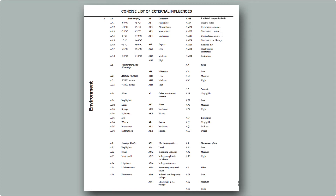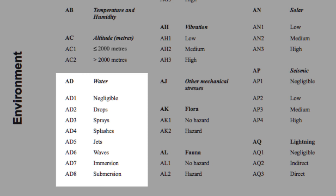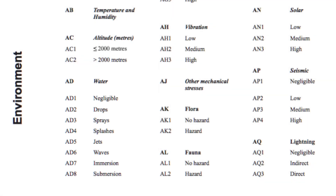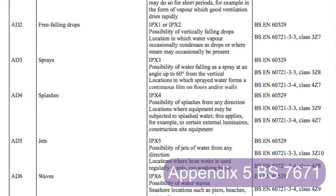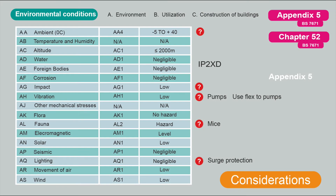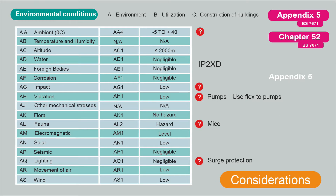The first letter refers to the category — environment, utilization, or construction of buildings. The second letter relates to the nature of the external influence, and the number at the end relates to the class within each external influence. For water, for example, it gives categories: drips, spray, splashes, jets, waves, immersion, submersion — describing the source and magnitude — and then gives guidance on equipment selection and IP ratings to deal with those conditions.